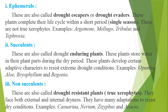Some examples of ephemeral plants: first, Argemone; second, Mollugo; third, Tribulus; and fourth, Tephrosia.